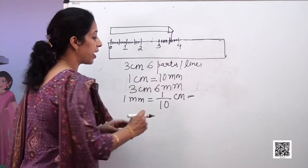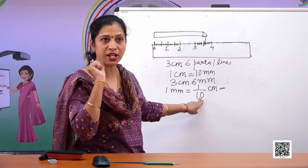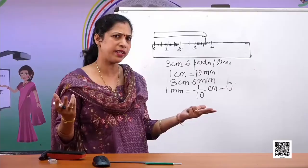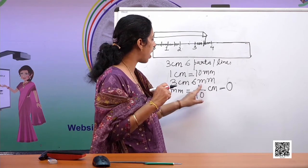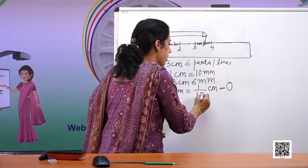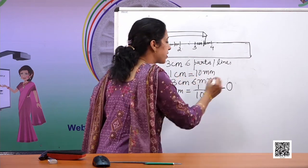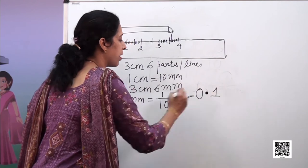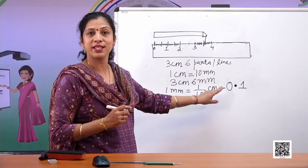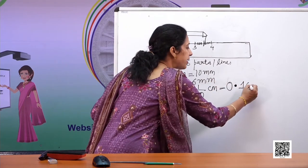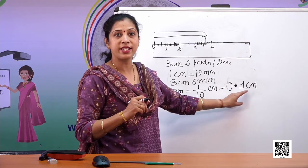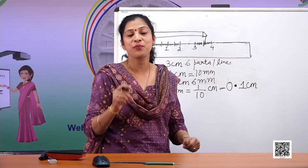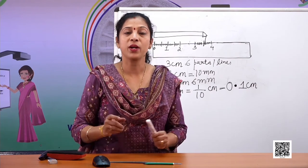So one millimeter equals one tenth of a centimeter. How do we write this in decimal? It is very simple. There is no whole number here — it is a fraction. So we write the whole number as zero. One tenth has one zero, so we put the point — that is the decimal point — and write one after it. So one tenth of a centimeter is zero point one centimeter. One millimeter equals 0.1 centimeter.